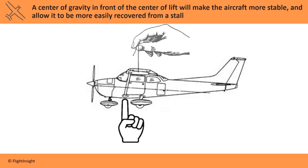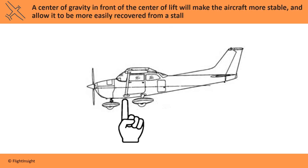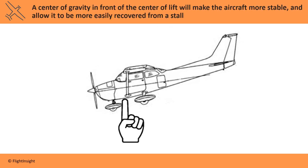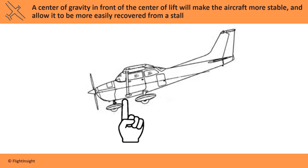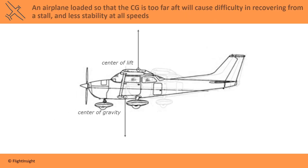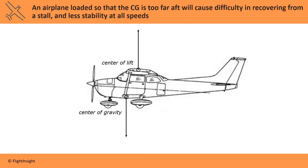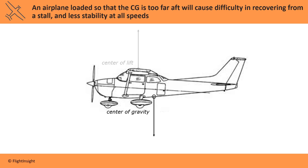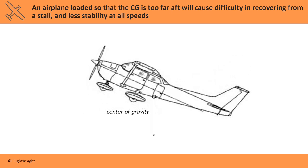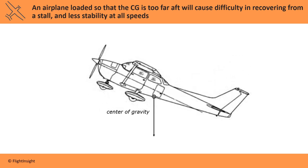A center of gravity in front of the center of lift will make the aircraft more stable and allow it to be more easily recovered in a stall. An airplane loaded so that the CG is too far aft will cause difficulty in recovering from a stall, and less stability at all speeds.